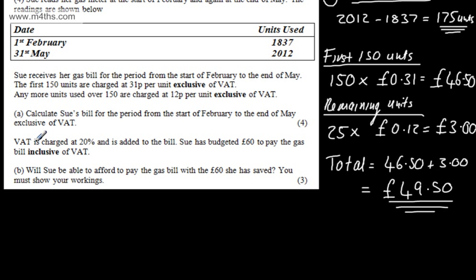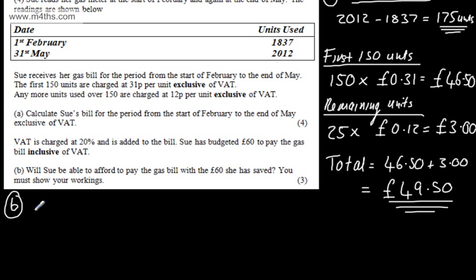We're now told VAT is charged at 20% and added to the bill. Sue has budgeted £60 to pay the gas bill, inclusive of VAT. In part B, for three marks, it asks: will Sue be able to afford to pay the gas bill with the £60 she has saved? You must show your workings.